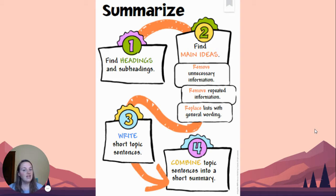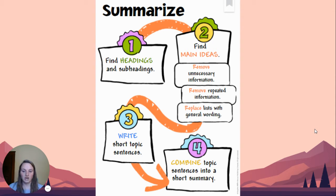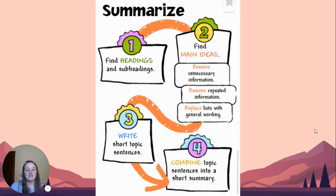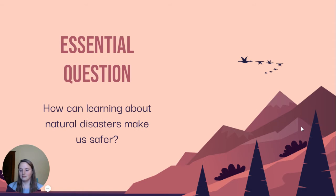Then get rid of any unnecessary information, remove repeated information, and replace lists of words with general wording. Then write a short topic sentence and combine topic sentences into a short summary. We're going to keep thinking about our essential question: how can learning about natural disasters make us safer?